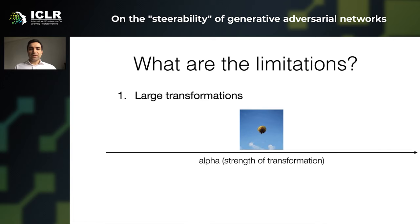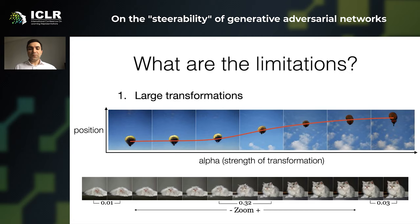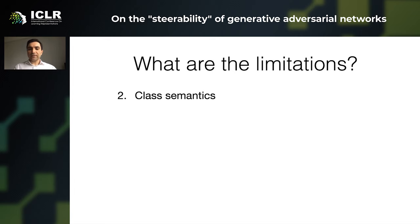So what are the limitations? Look at this balloon — we can send it up and down, but after a while we hit a plateau and see some sigmoid effects. Similarly, for this cat, when we want to zoom in, we hit limits. We hypothesize this is because the GAN has never seen a super-zoomed version of a cat.